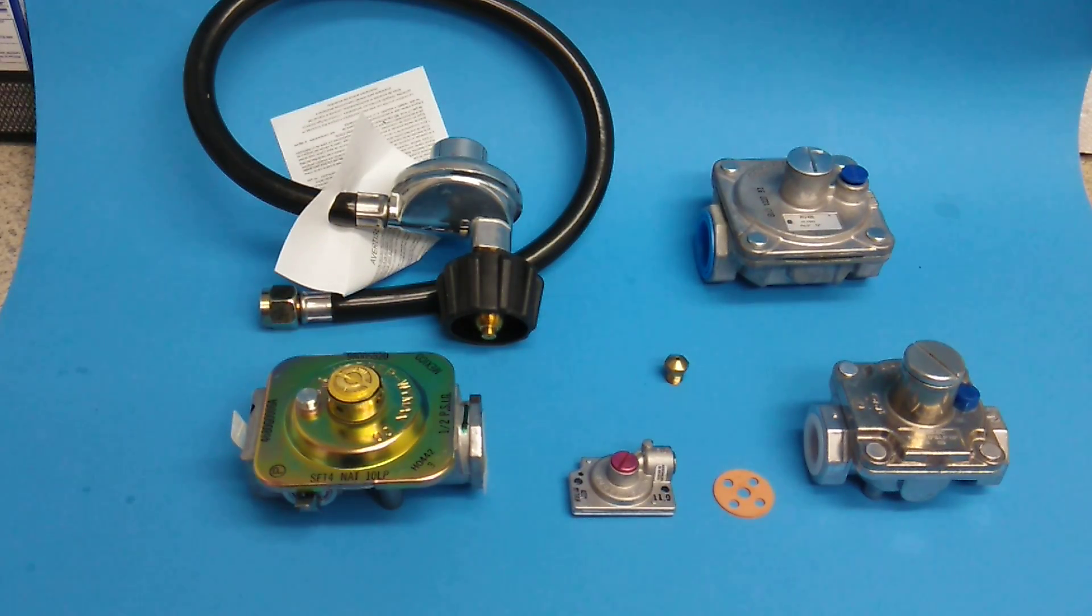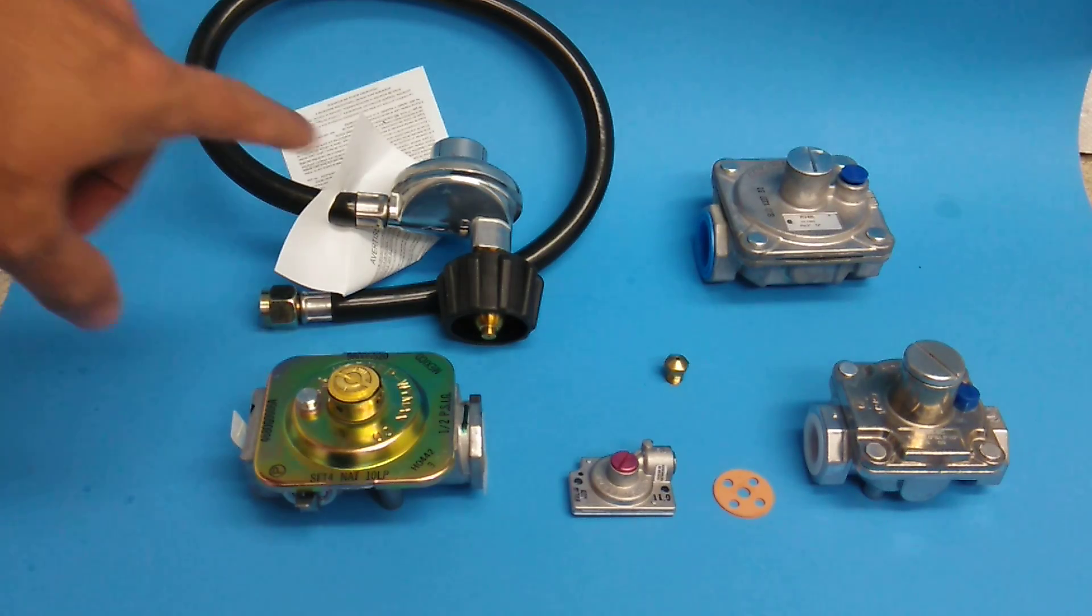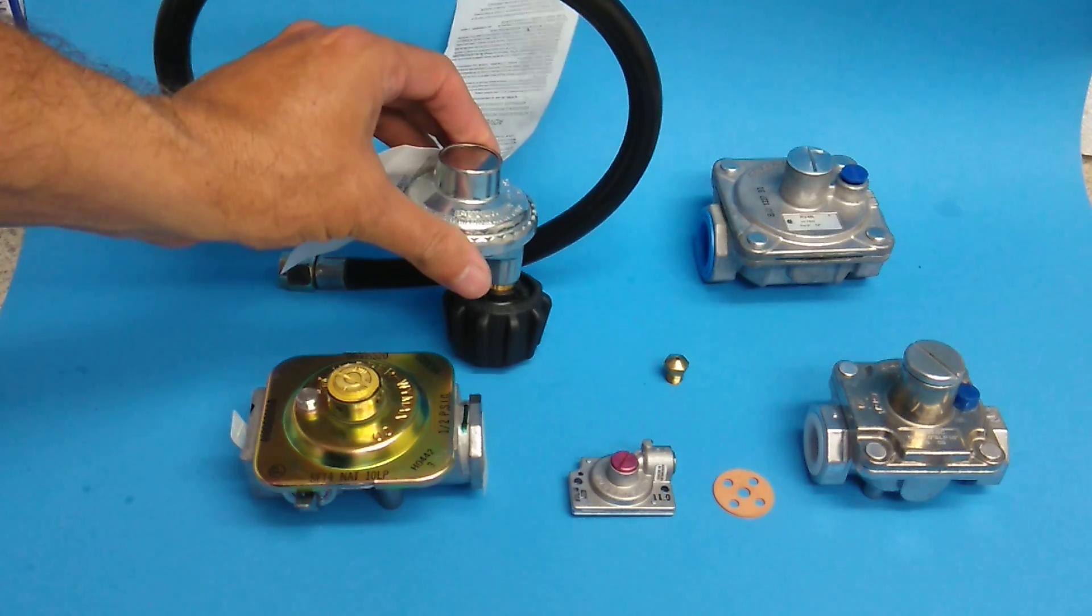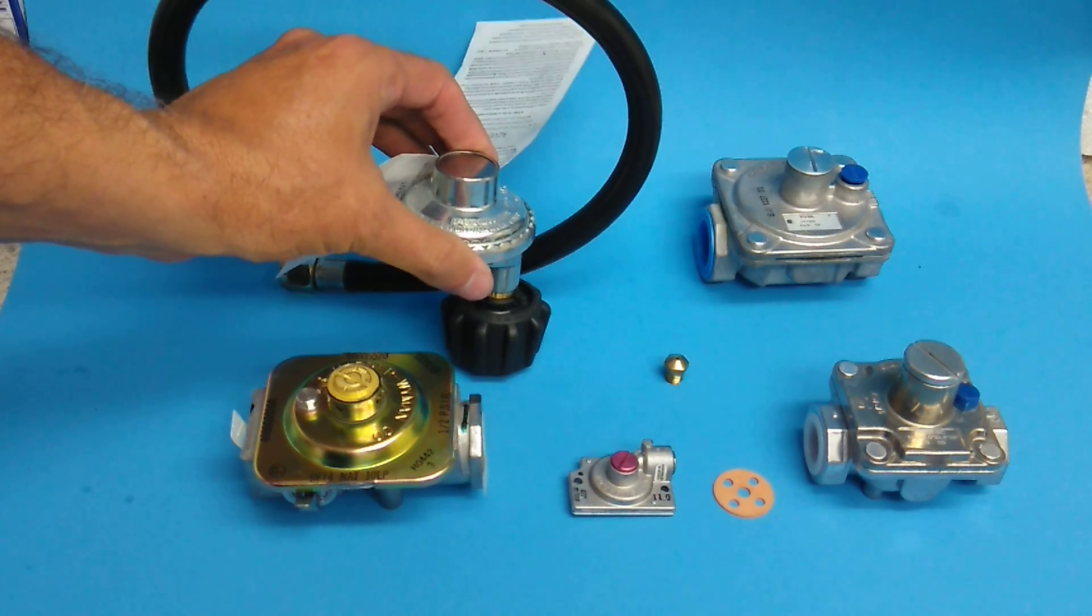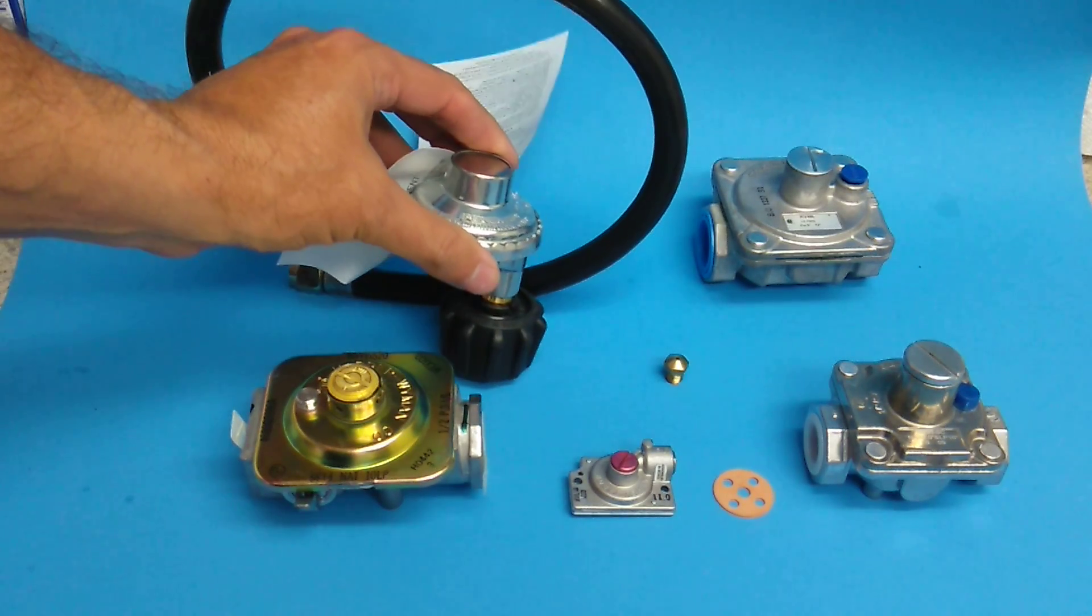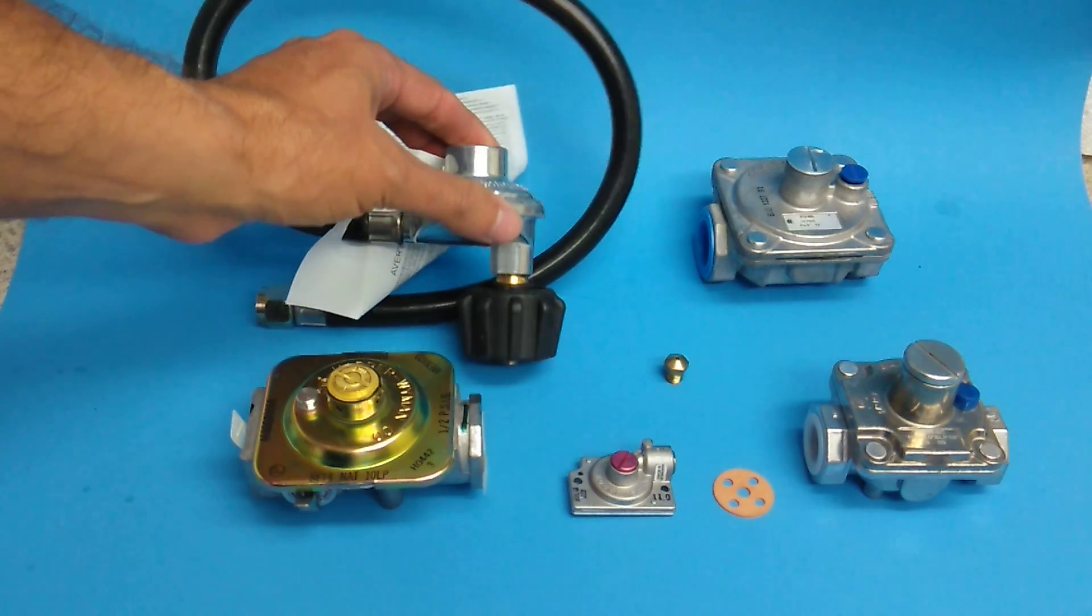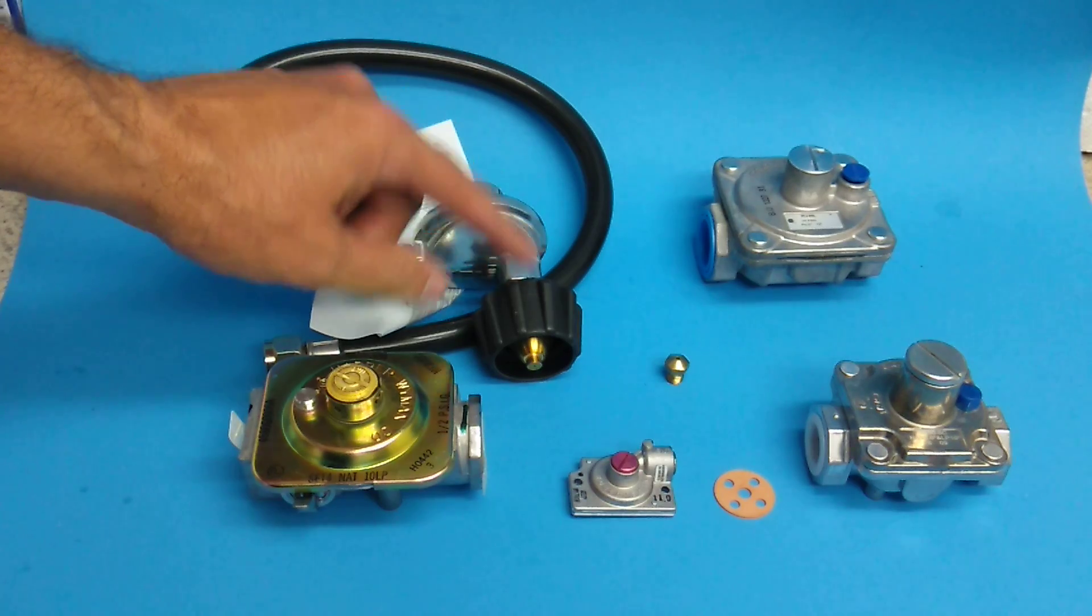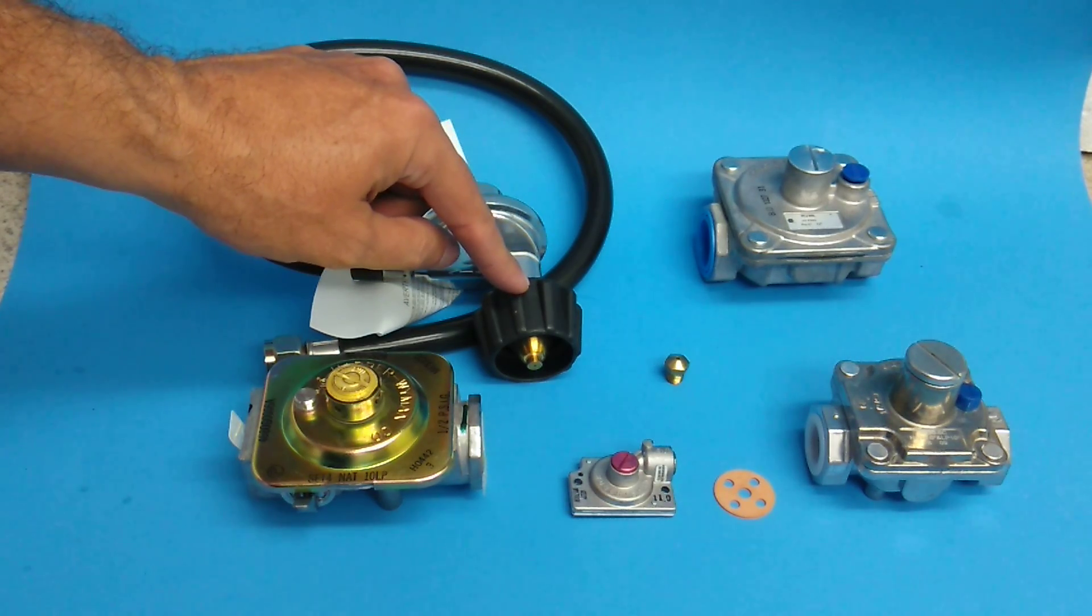Now this is the most common type and this is a propane regulator that you find on a barbecue. It's a fixed regulator so it can't be adjusted and it does have what's known as this QCC1 connector that connects it to the propane bottle.